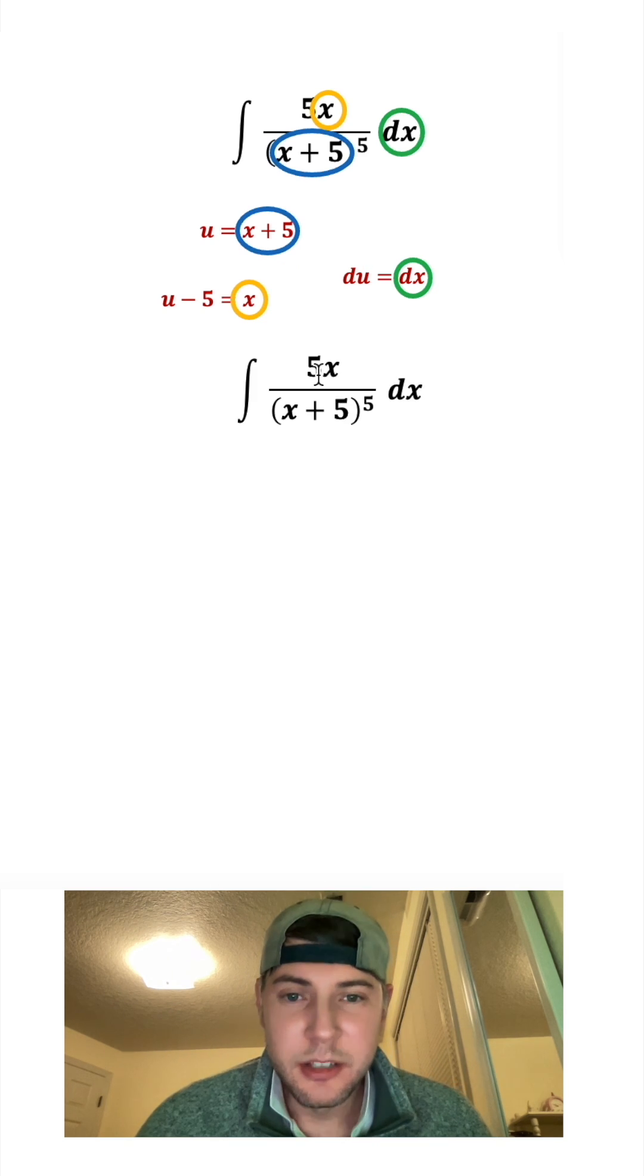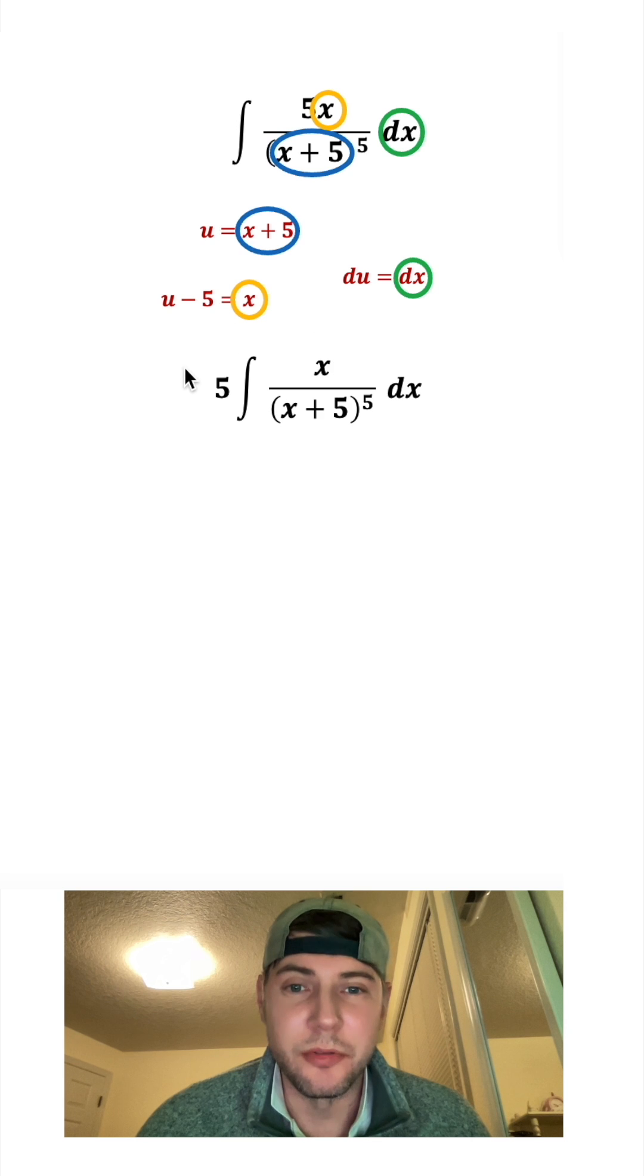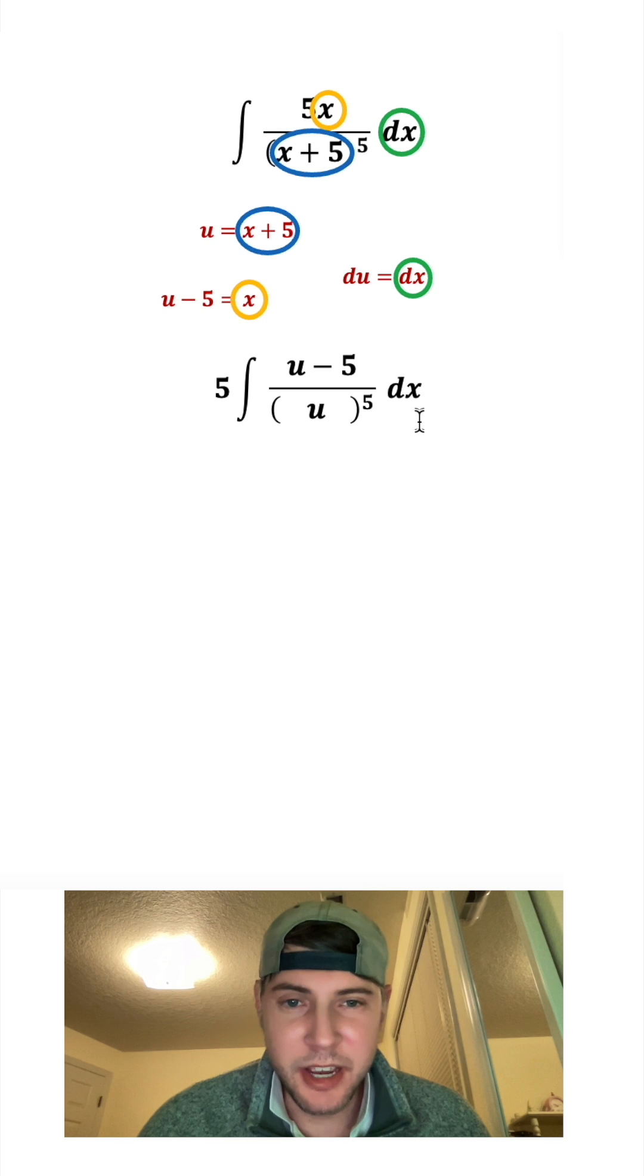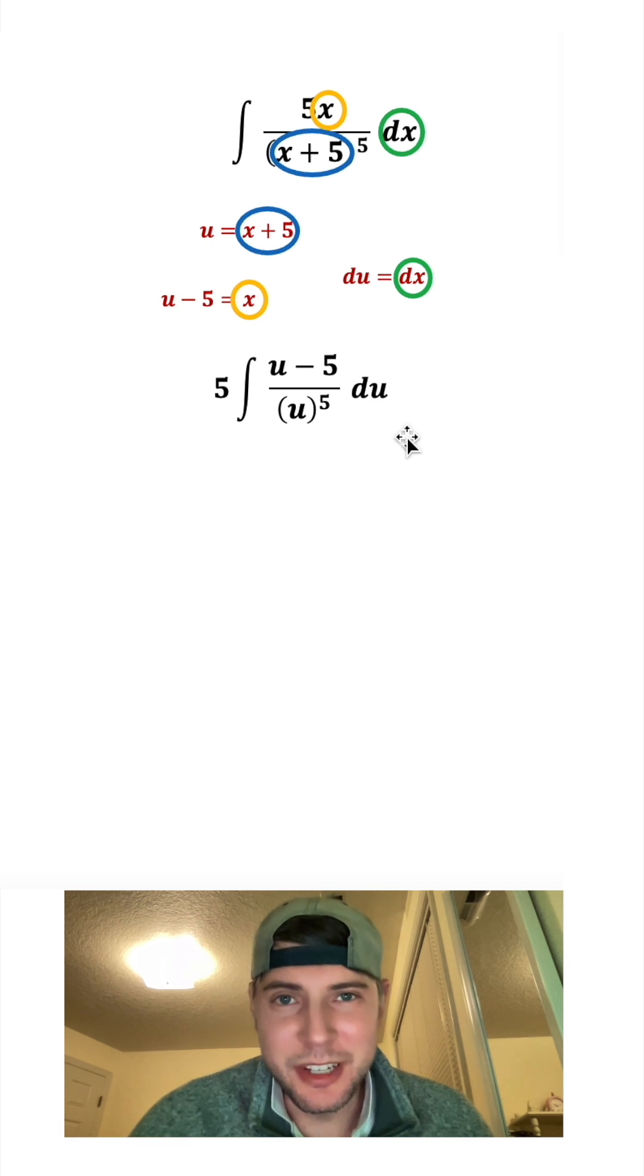Let's copy this down here. Let's bring this constant 5 multiple to the front. Substitute for the x plus 5 a u. Substitute for the x a u minus 5. And the dx will become du. And we can smush everything together.